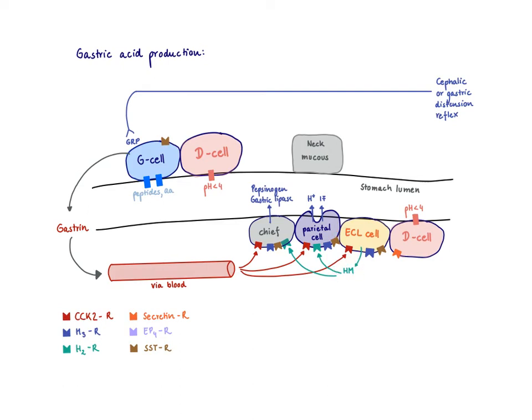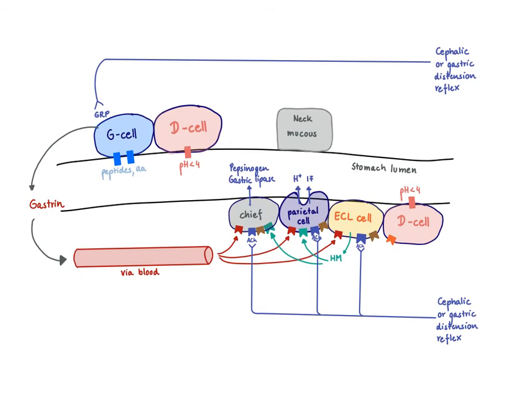Histamine, as well as gastrin, can stimulate the chief cell to make pepsinogen and gastric lipase. Besides gastrin acting as a hormone and histamine acting as a paracrine mediator, we can also have stimulation through acetylcholine, which is released during a gastric distension reflex and also during the cephalic phase. Acetylcholine acts on the M3 receptors and can also stimulate acid production.